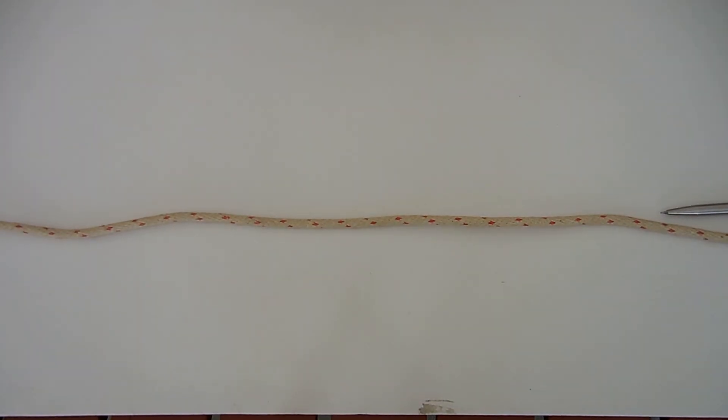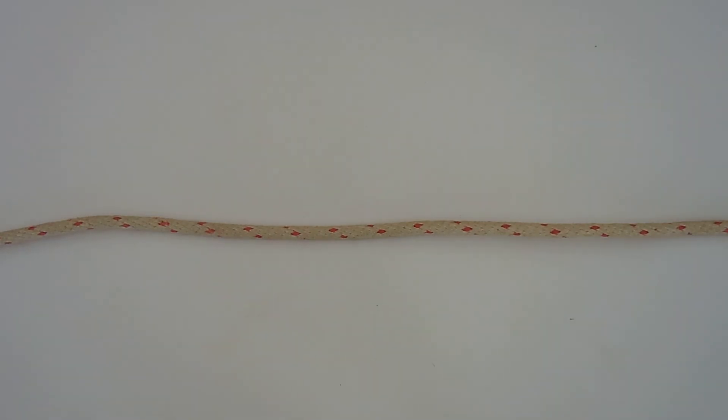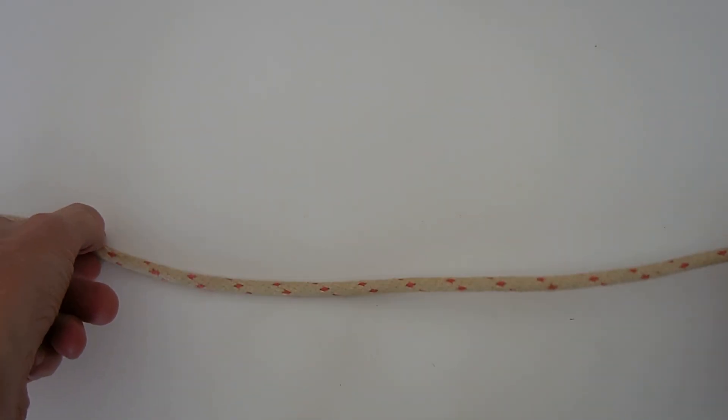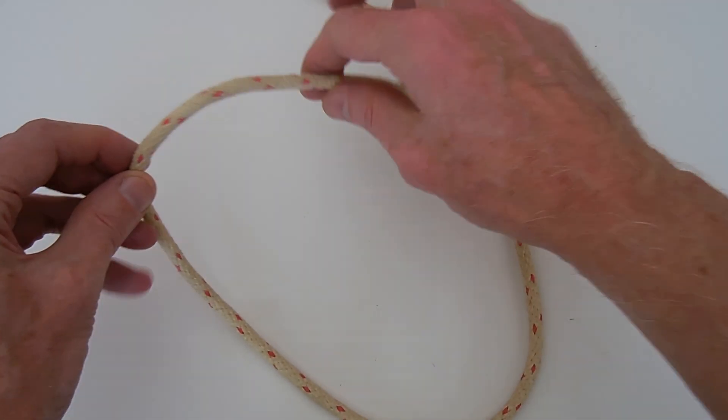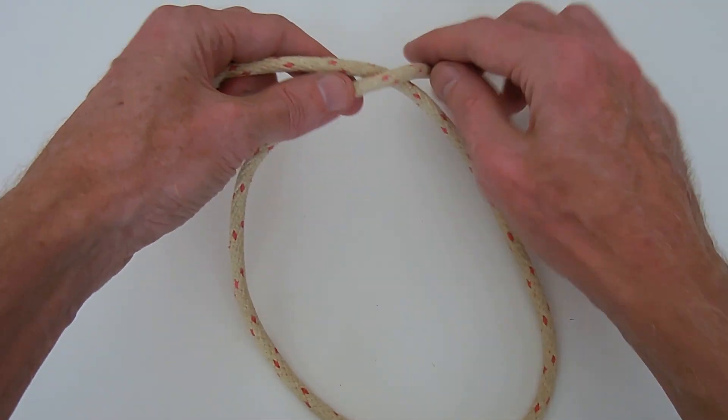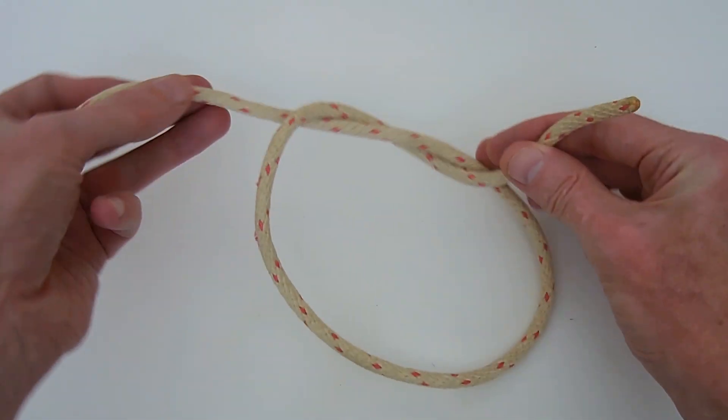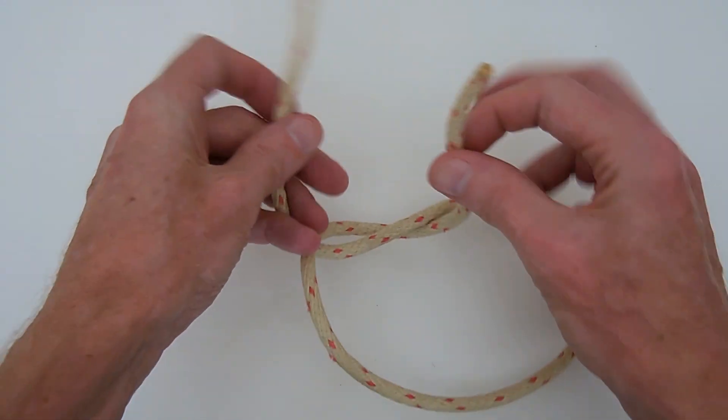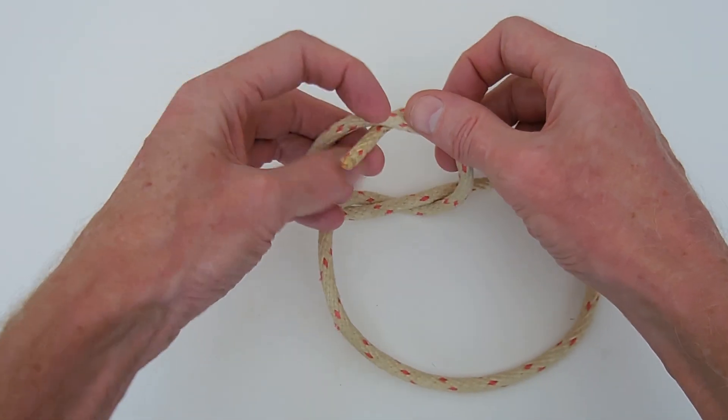So in this video, I'll show you why a granny knot actually comes undone. And to do that, I'll use a piece of rope, which I've got here, and I'll begin by tying a reef knot the way I tie, which is a left over right starting knot, followed by a right over left finishing knot.